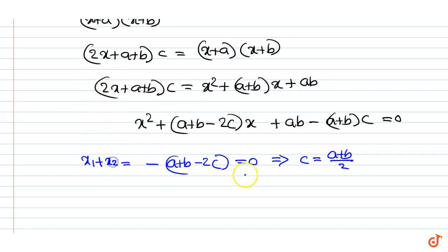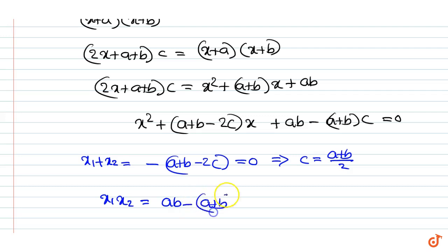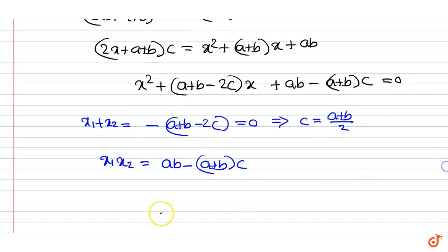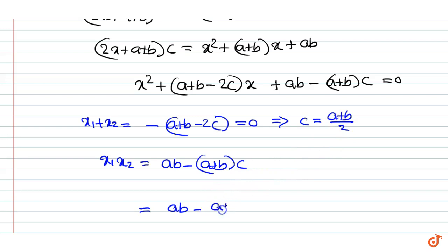The product of the roots is x1·x2 = ab − (a+b)·c. Substituting c = (a+b)/2, this is equal to ab − (a+b) · (a+b)/2, which equals ab − (a+b)²/2.